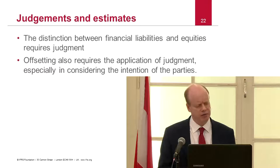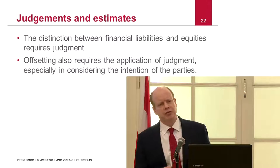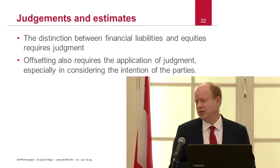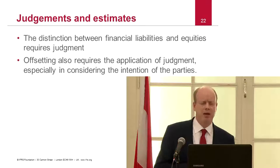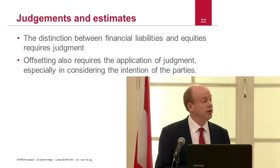That's IAS 32 — it is a tough area. We'll be looking at some examples after lunch and some case study questions. The key thing to think about is: do you have a liability or an equity? Think of the word 'obligation.' Does the entity have an obligation to do something — maybe it's to pay interest, to redeem a share, or to pay a dividend? And of course, sometimes there can be both an equity and a liability component.